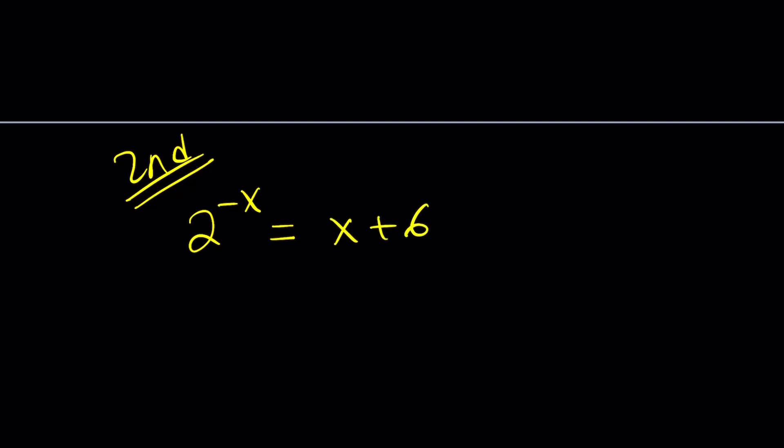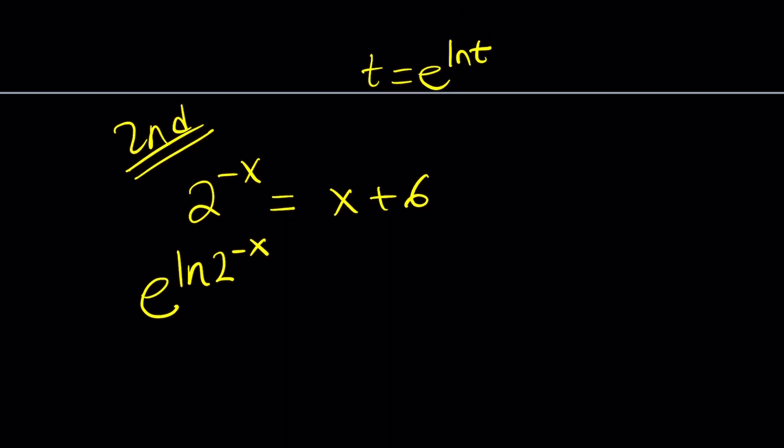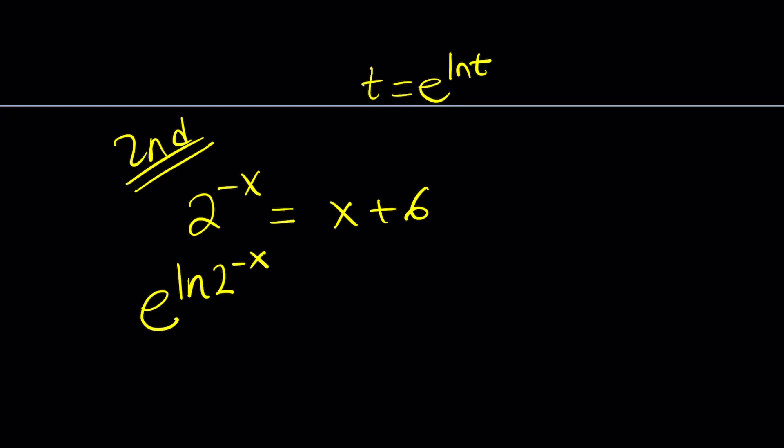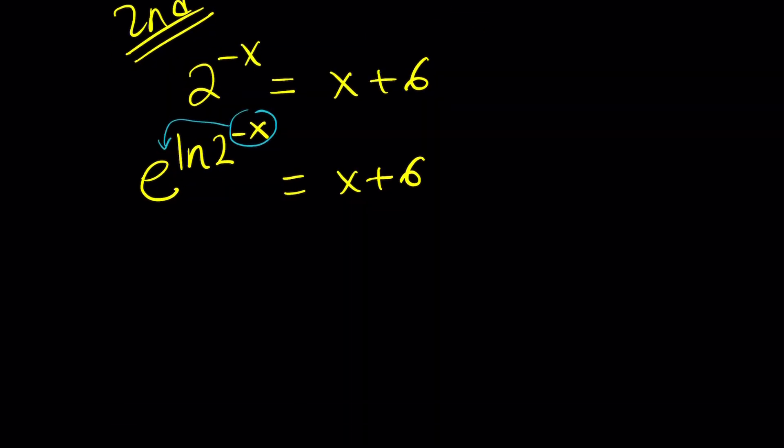So I'm going to start here. 2 to the power of negative x equals x plus 6. Remember, we already wrote the 1 half to the x. And now I'm going to do a little bit of manipulation. Let's first write this as e to the power ln 2 to the power of negative x. Because anything like t can be written as e to the ln t, right? And we're dealing with real numbers, so we don't have to worry about complex exponentiation. So now this is equal to x plus 6. And then we can go ahead and bring this negative x to the front. And this becomes e to the power of negative x ln 2 equals x plus 6.